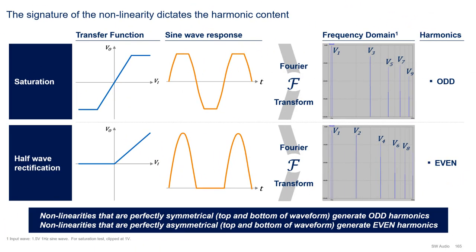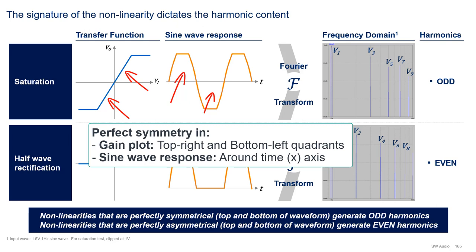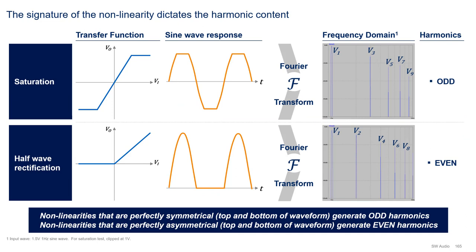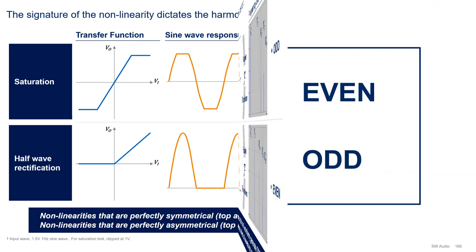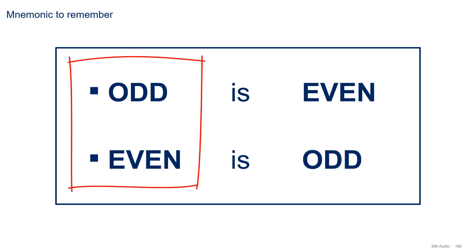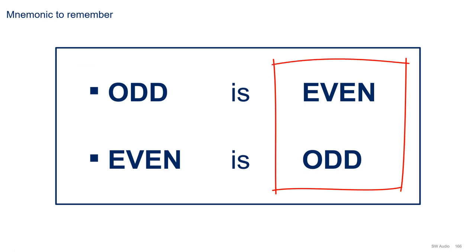Based on what we saw, a new question arises: what order harmonics are produced by a non-linearity? Saturation, a perfectly symmetrical non-linearity — meaning the top and bottom of the gain plot are identical — yields odd harmonics. Half-wave rectification, a perfectly asymmetrical distortion — meaning nothing on the top and bottom of the gain plot is repeated — yields even harmonics. It turns out that non-linearities that are perfectly symmetrical generate odd harmonics, while non-linearities that are perfectly asymmetrical generate even harmonics. This leads to a mnemonic worth remembering: odd is even and even is odd, where the first descriptor refers to the symmetry of the non-linearity and the second one to the harmonic content produced.